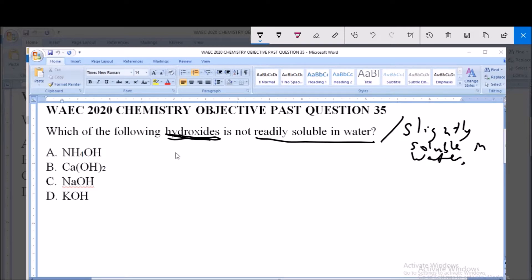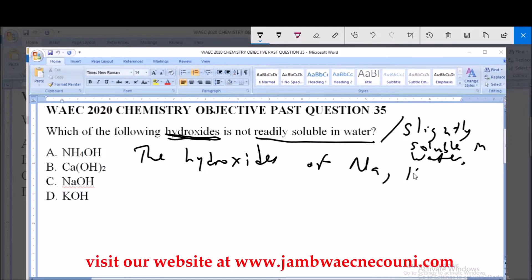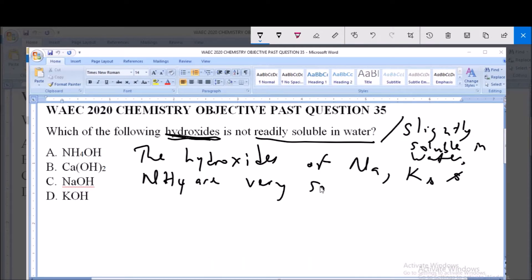Now there is a general rule guiding solubility of hydroxides in water, and that rule is that the hydroxides of sodium, potassium, and ammonium are very soluble in water.